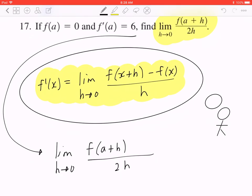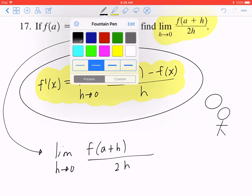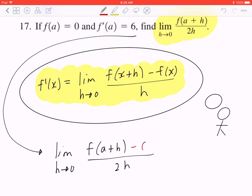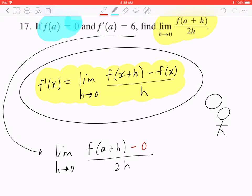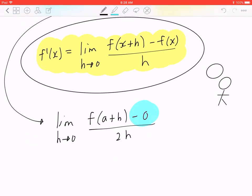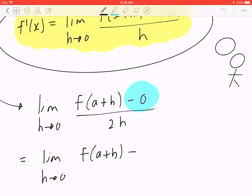What you can do is add or subtract zero. Now the reason I'm doing this is because if you look at the given, f of a equals zero. So this implies that the limit of h approaching zero of f of a plus h minus, now instead of writing zero, you can write down f of a divided by two h.